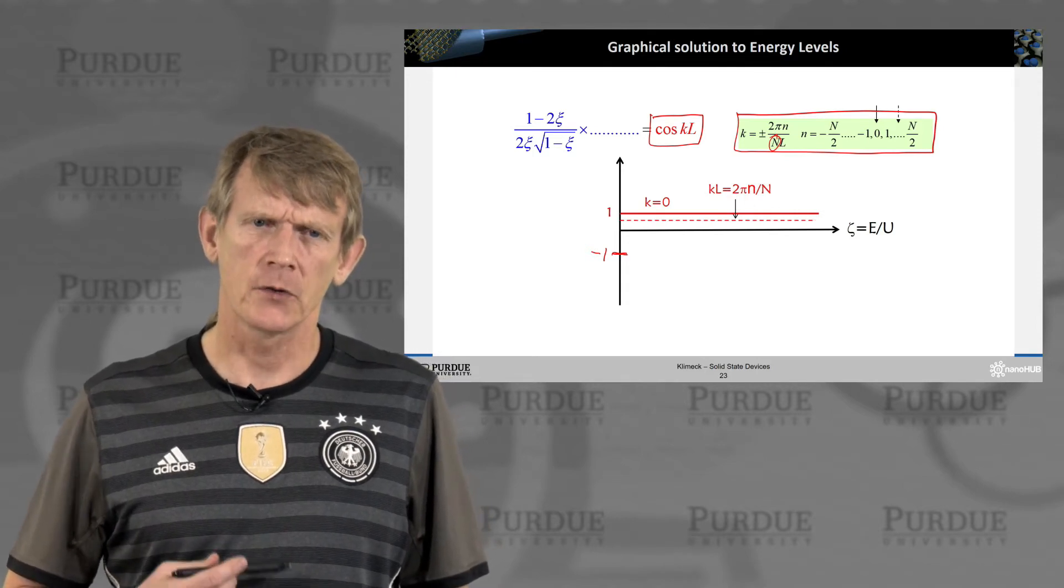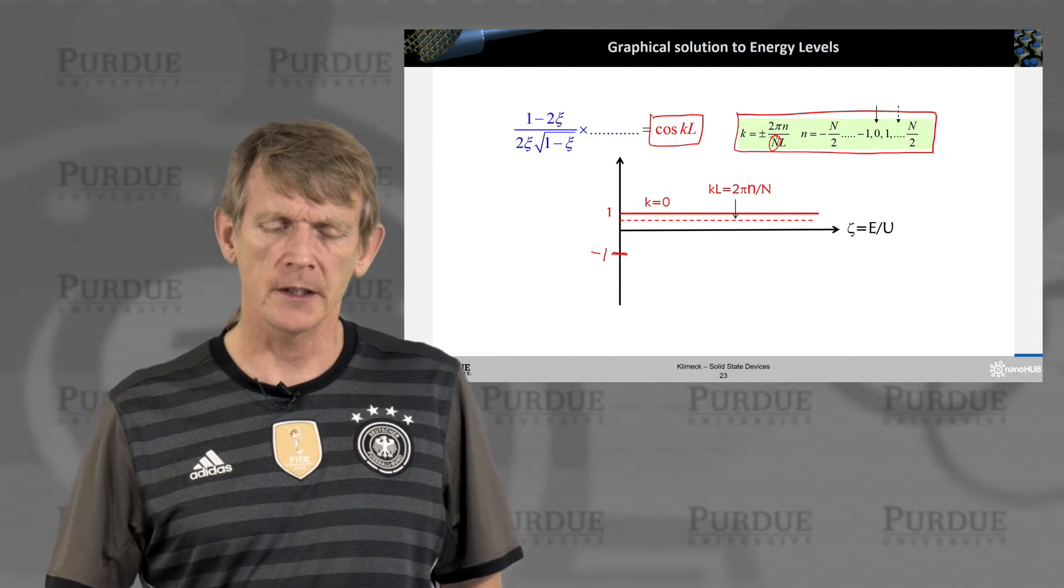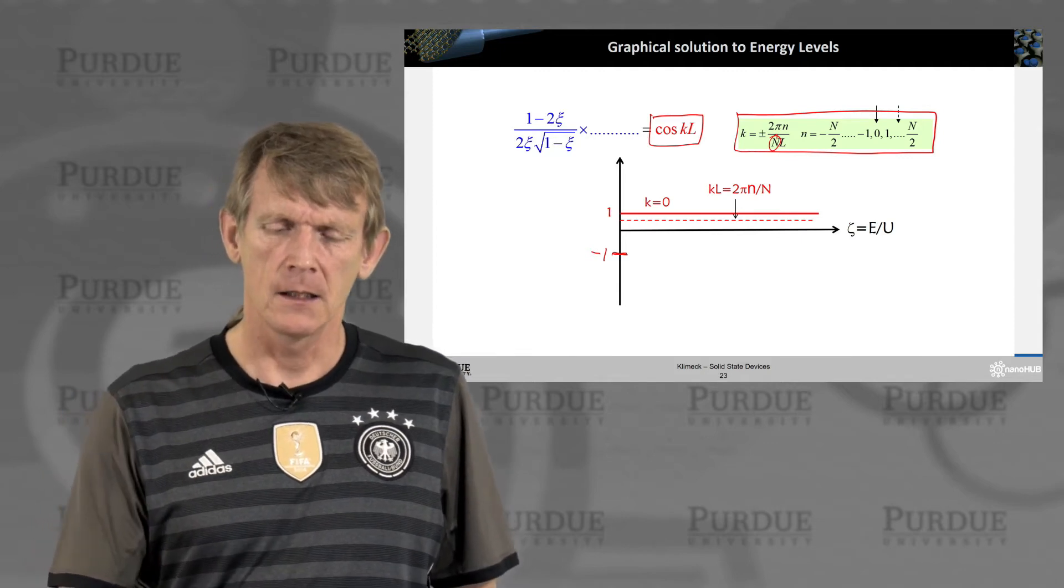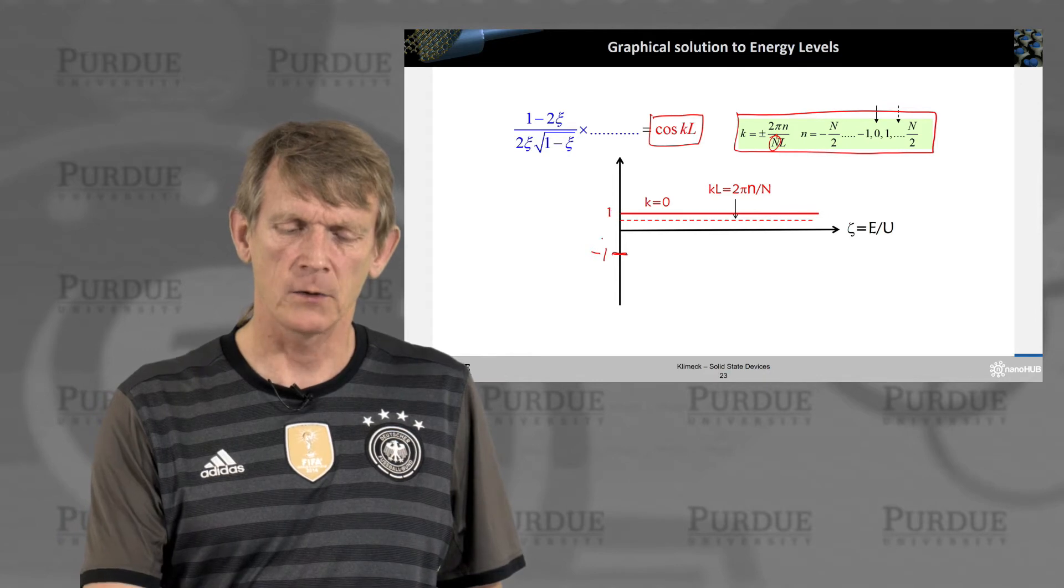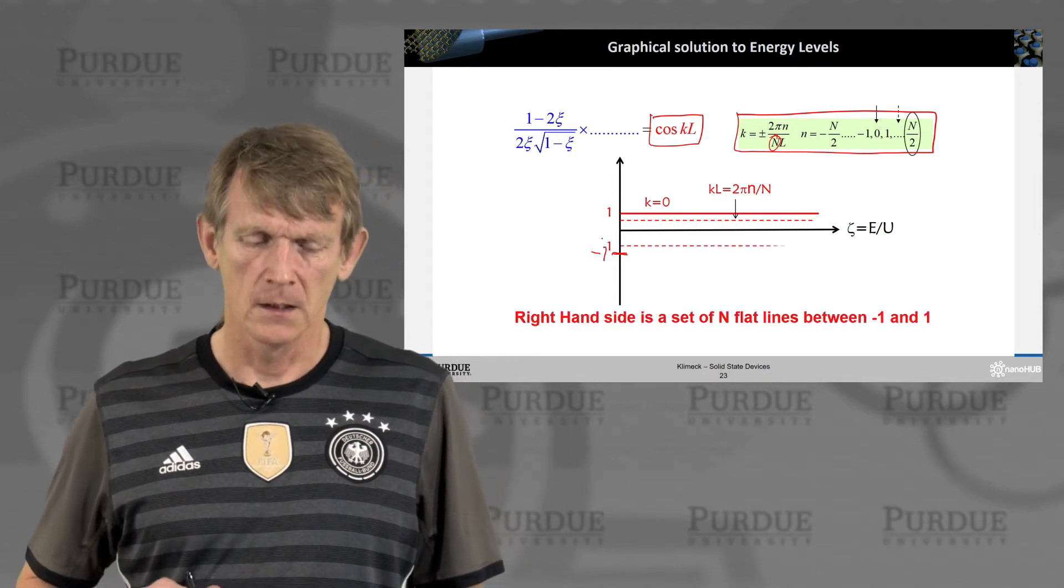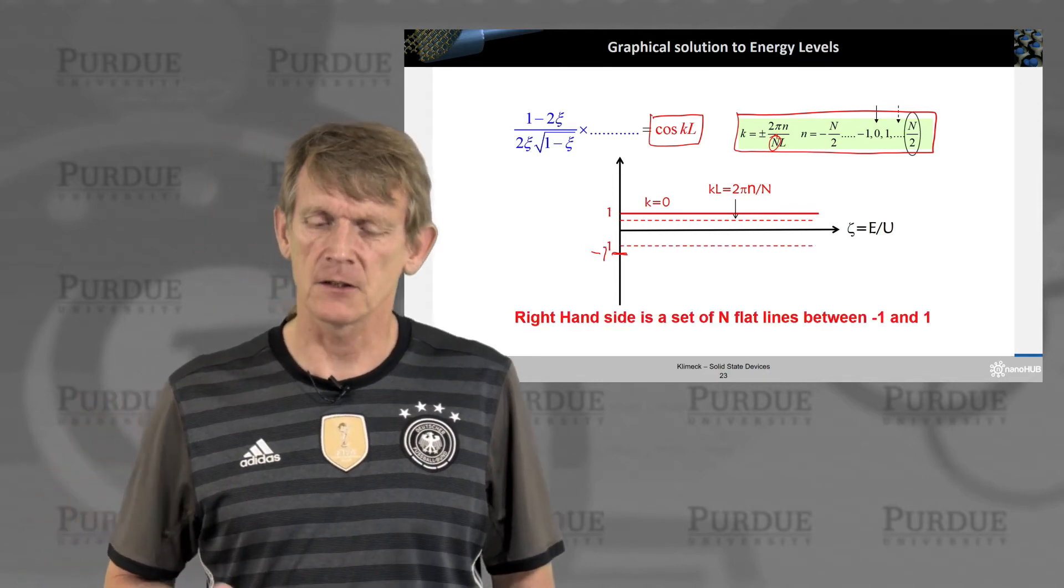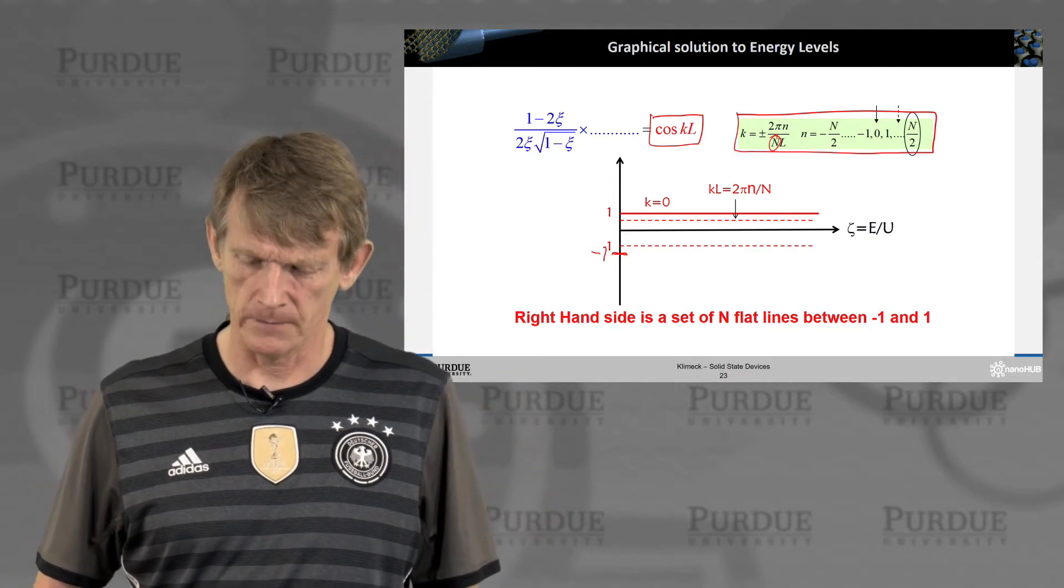So you basically will have lines here for different k's. So for a different k, you're exploring a certain value range that reaches between minus 1 and 1. So the right-hand side is a set of N flat lines between minus 1 and 1.